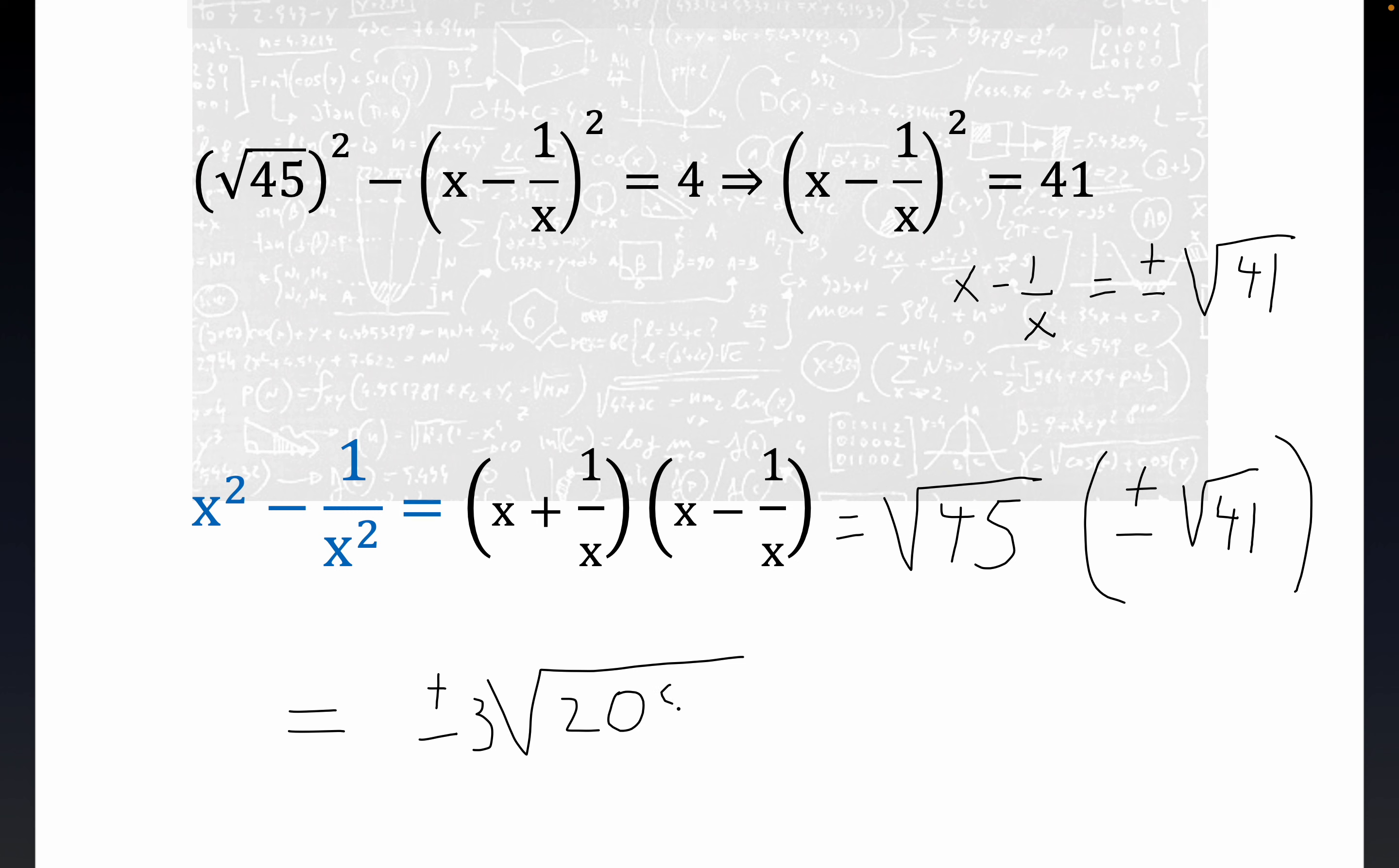So we have plus or minus three times the square root of 205. And that's our answer. There's two answers to this. Now, again, I think it's correct. I have a kind of a weird sinking feeling about this problem, but I think it's right. It's plus or minus three times the square root of 205.